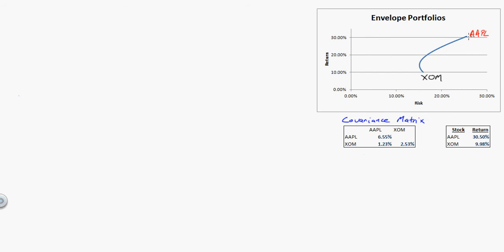So here we have the risk and return for Apple. For ExxonMobil, its expected return is 9.98%, its variance is 2.53. The square root of that gives the standard deviation, so that's the risk and return for ExxonMobil.